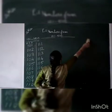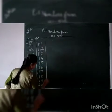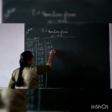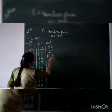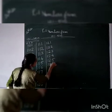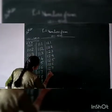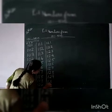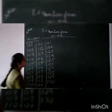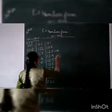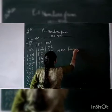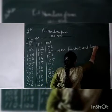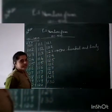Now after 120, which number? 121, 122, 123, 124, 125, 126, 127, 128, 129, and 130. Then how to write 123? One 100 and 20. What is the spelling of 20? T-W-E-N-T-Y.